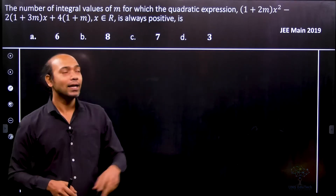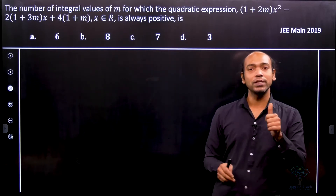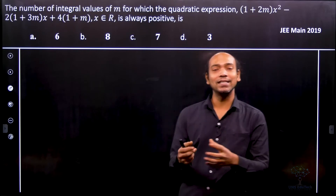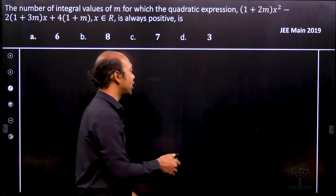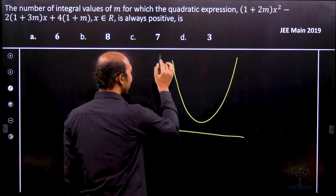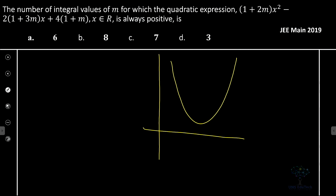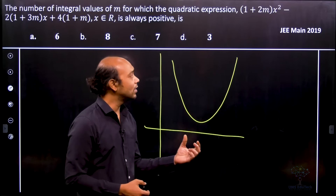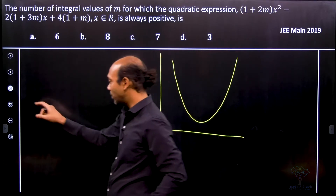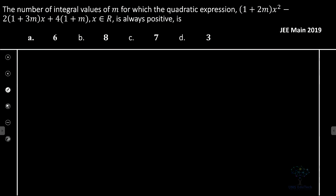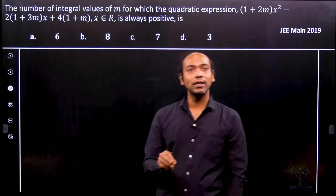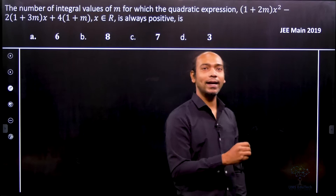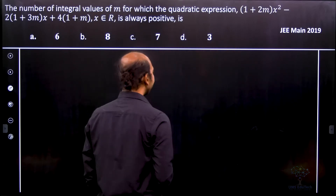The condition for complex or imaginary roots is that the discriminant of this equation is less than zero. The second condition is that the coefficient of x², which is 'a', must be greater than zero — because only then will it form an upward-opening parabola. So we need: a greater than zero AND discriminant less than zero. Based on these two conditions, we find the integral values of m.